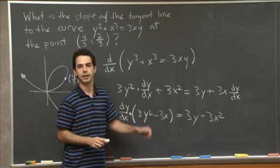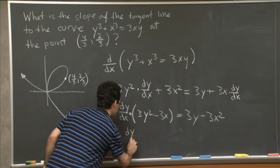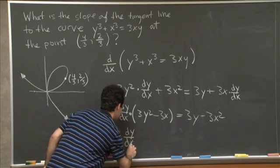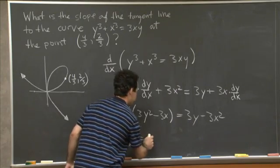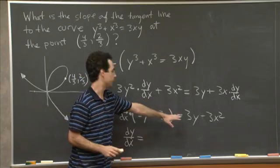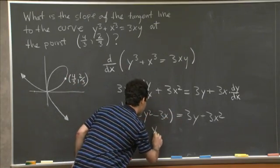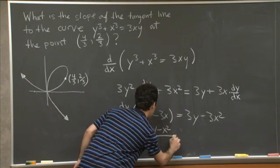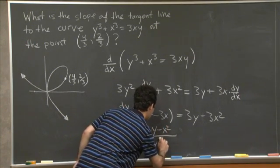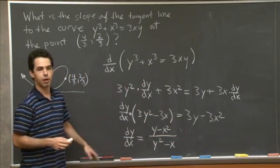And so we want dy by dx just by itself, so we can just divide through by 3y squared minus 3x. So then we have dy dx is equal to, well, all right, so there are a lot of 3's here. There's a constant multiple 3 on this side, a constant multiple 3 on this side. Those are going to cancel.